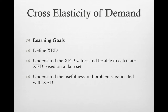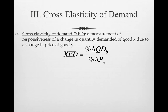Let's get right into cross elasticity of demand. It's very similar to the definition of price elasticity of demand, but with one slight change. It is a measurement of responsiveness of a change in quantity demanded of good X due to a change in price of good Y. Basically, cross elasticity of demand looks at: if the price of one good goes up or down, how does that impact the quantity demanded for another good?